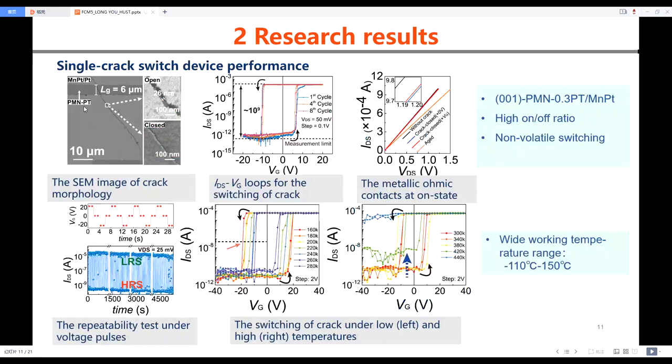In this work, we select PMN-PT single crystal as the ferroelectric material and Ni-Pt as the metallic thin film. From the IV curve, we can find that our device shows a high on-off current ratio even at a small VDS and also provides a non-volatile characteristic.